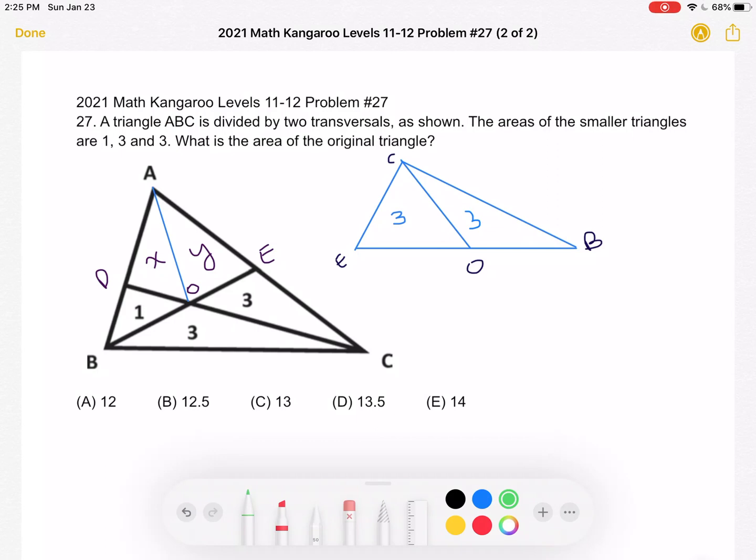And that splits that unknown area into X and Y. So we're going to try to figure out what X and Y are, and then add that to 1, 3, and 3 to find the area of the original triangle as given to us by the question.